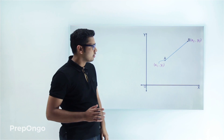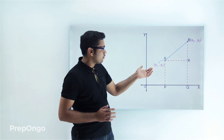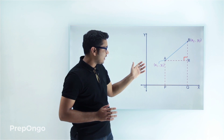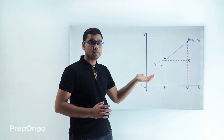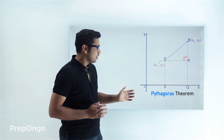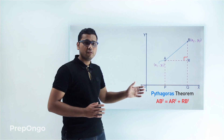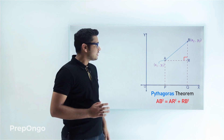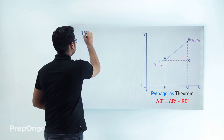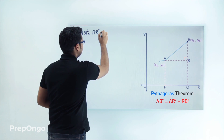I have drawn AP and BQ perpendicular to the x-axis and AR perpendicular to BQ. So we can find out the length of AB in triangle ARB. This triangle is a right angle triangle, so we can always apply Pythagoras theorem. Pythagoras theorem says that hypotenuse squared equals the sum of the squares of the other two sides. So AB squared will be equals to AR squared plus RB squared.